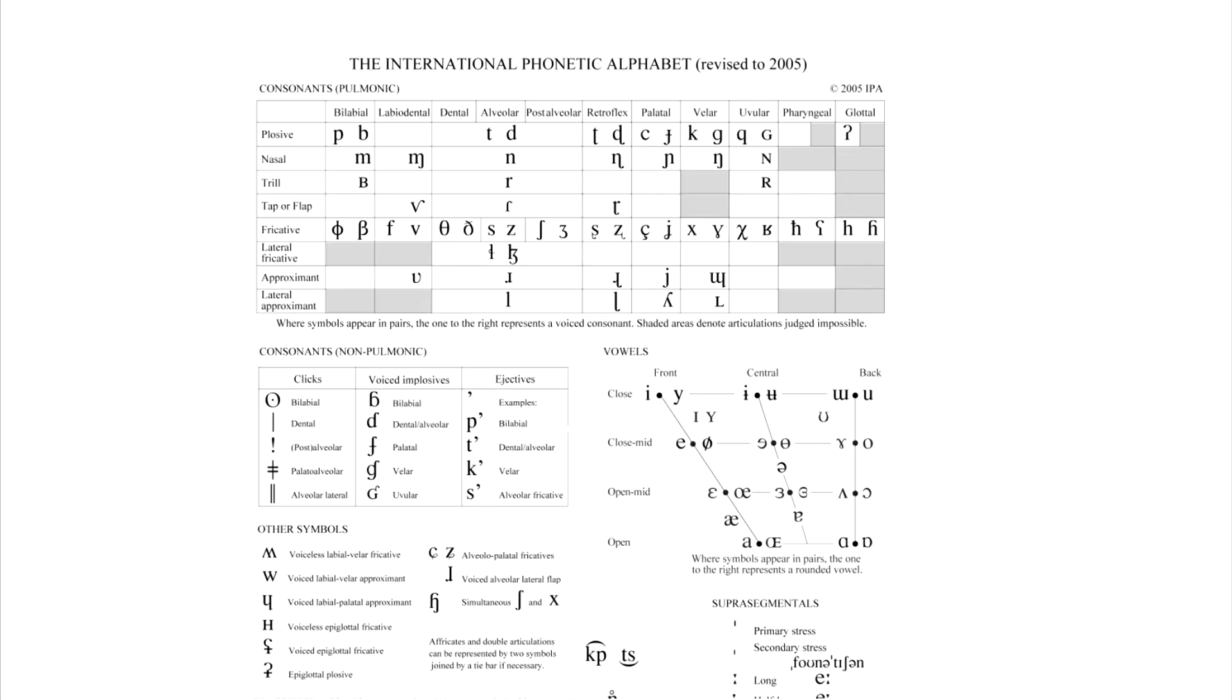So how do we do that? Well, we have this thing called the international phonetic alphabet. And this is super scary at this point. But what I want to point out here is that this first part up here is the consonants. And these are the consonants in every language in the world. These are not just English consonants. We'll show you just English consonants later. But on the left side, we have a bunch of words like plosive, nasal, trill, tap, fricative, things like that.